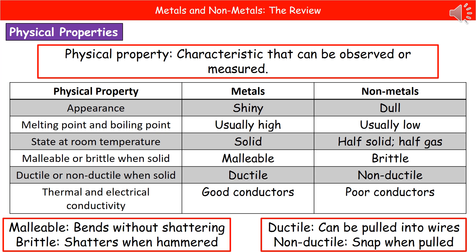Melting points and boiling points for metals are usually high, but for non-metals those are usually low. If we look at the state at room temperature, virtually all metals are solid, whereas non-metals are half solid and half gas.